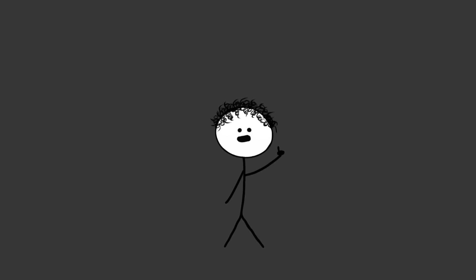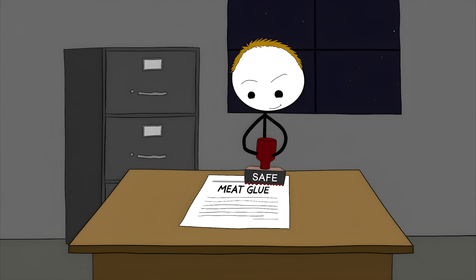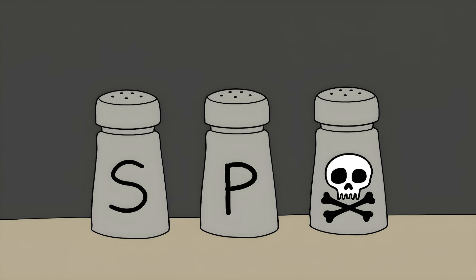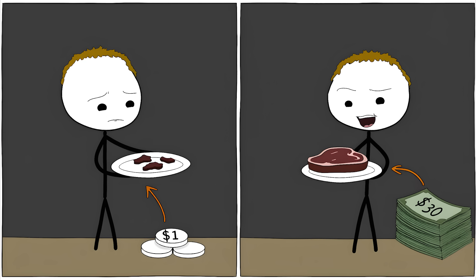Restaurants and food companies don't have to tell you they're using it. The FDA considers it generally recognized as safe, or GRAS. That's the same category as salt and pepper. But unlike salt and pepper, this stuff can turn meat scraps worth a few bucks into a $30 steak.